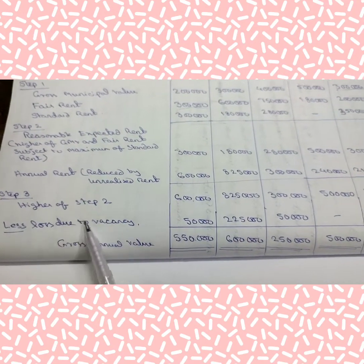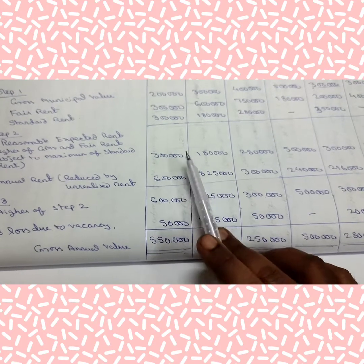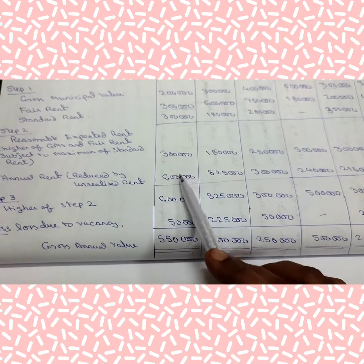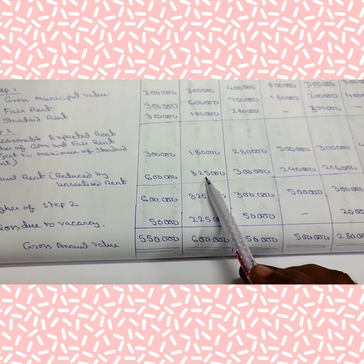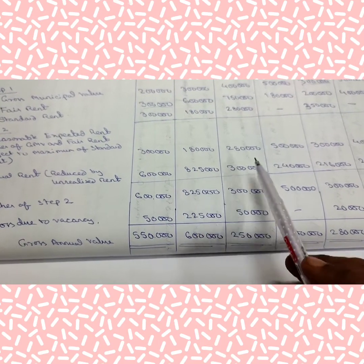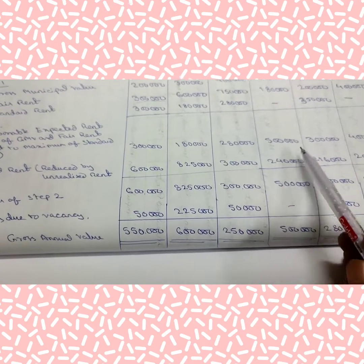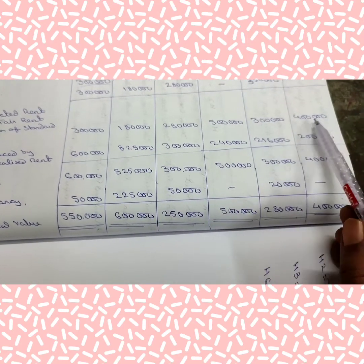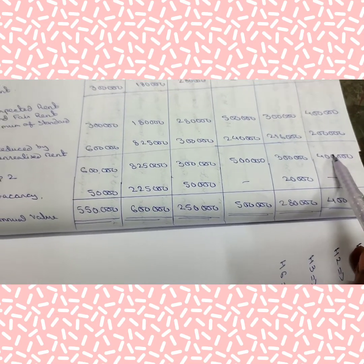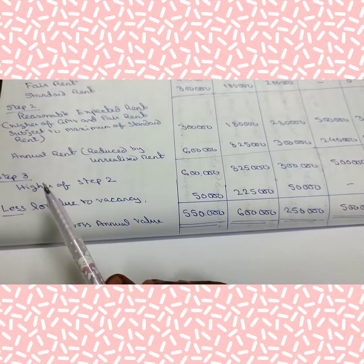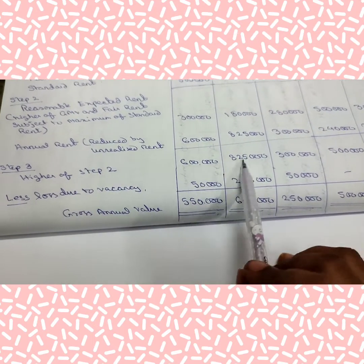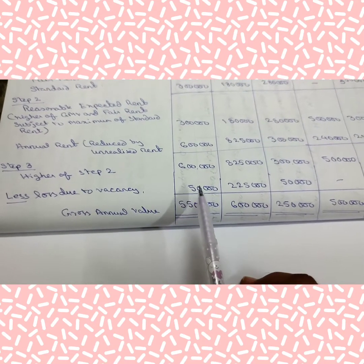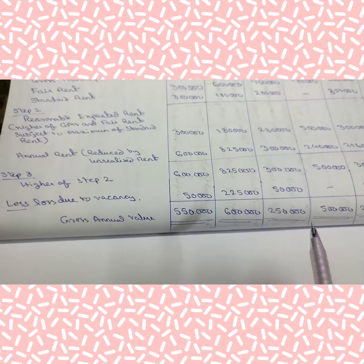In step 3, compare reasonable expected rent and annual rent and take the higher. House 1: higher is 6 lakhs. House 2: higher is 8,25,000. House 3: higher is 3 lakhs. House 4: higher is 5 lakhs. House 5: higher is 3 lakhs. House 6: higher is 4 lakhs. Now from these, we reduce the loss due to vacancy.